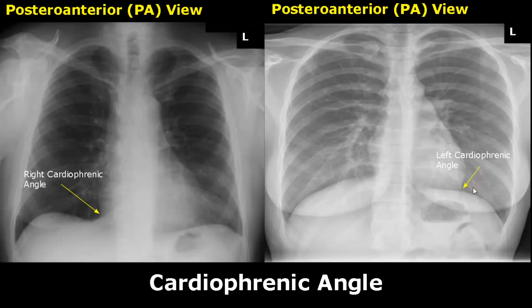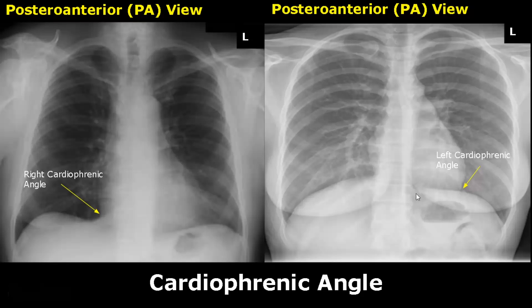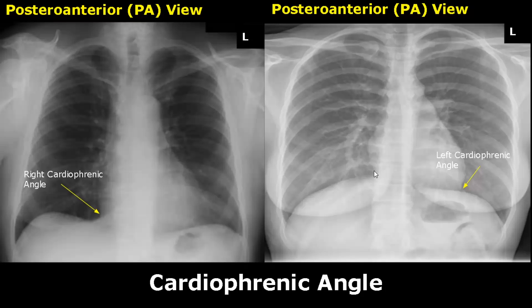The cardiophrenic angle is the angle between the heart and the diaphragm. There are two cardiophrenic angles — this is the right cardiophrenic angle and this is the left cardiophrenic angle.